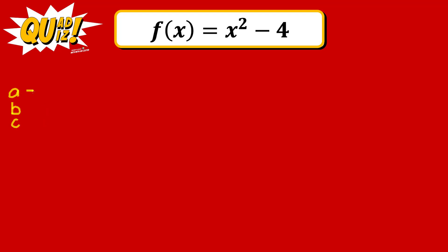In this given function, b is the coefficient of x, but there is no x term here, so b is 0. The minus 4 is the constant, but please do not forget to include the negative sign for the constant.